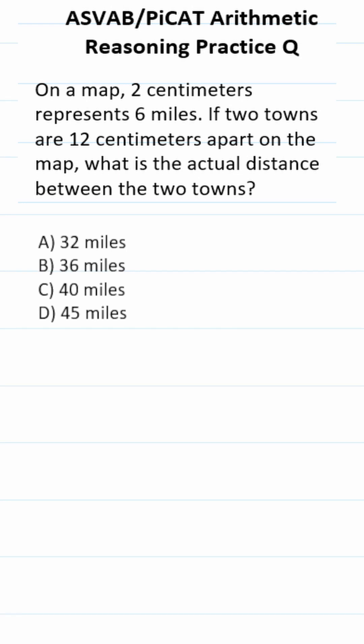This ASVAB PiCAT arithmetic reasoning practice question says on a map two centimeters represents six miles. If two towns are 12 centimeters apart on the map, what is the actual distance between the two towns?